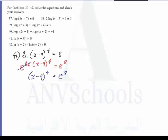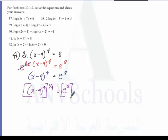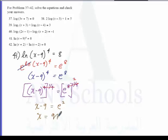We can raise both sides to the exponent 1 over 4: x minus 9 raised to 4, raised to 1 over 4, equals e raised to 8 raised to 1 over 4. This simplifies the left side to x minus 9, and the right side becomes e squared. Therefore x equals 9 plus e squared.